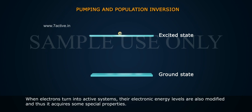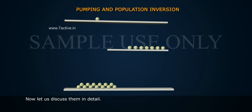When electrons turn into active systems, their electronic energy levels are also modified and thus it acquires some special properties. Now, let us discuss them in detail.